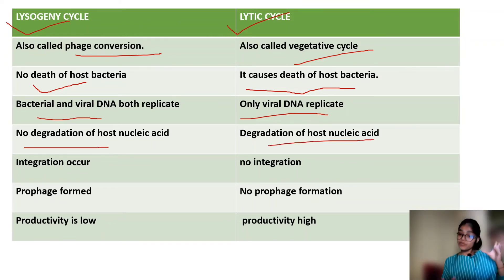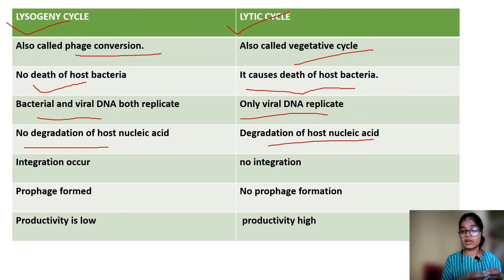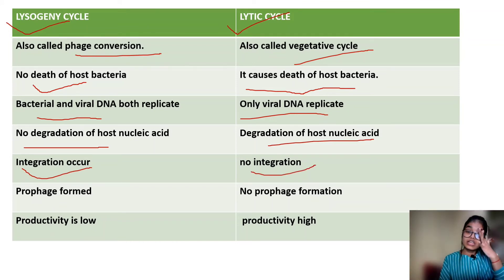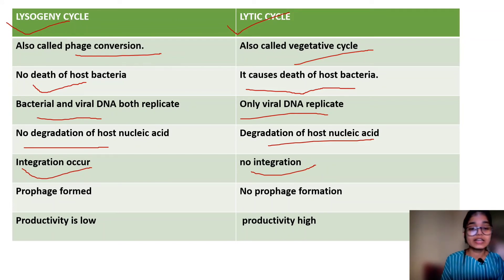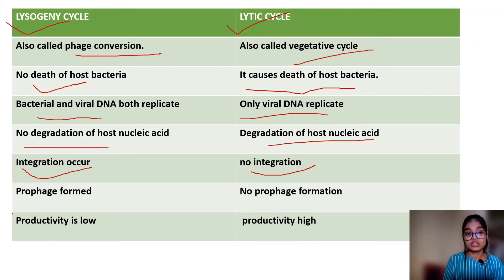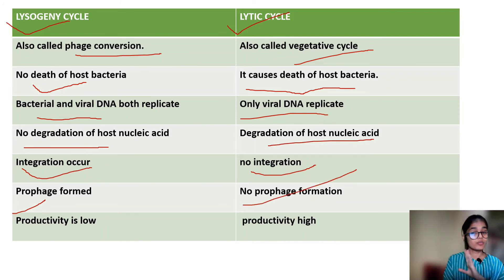When the viral DNA is integrated into the host's DNA, the phage is attached to the particle, and an integration mechanism is used. We call this integration. There is no integration in the lytic cycle because the host's DNA is degraded. When the viral DNA integrates into the host's DNA, the resulting structure is called a prophage. Prophage formation occurs in lysogeny — this is a very important point. But in the lytic cycle, there is no prophage formation.